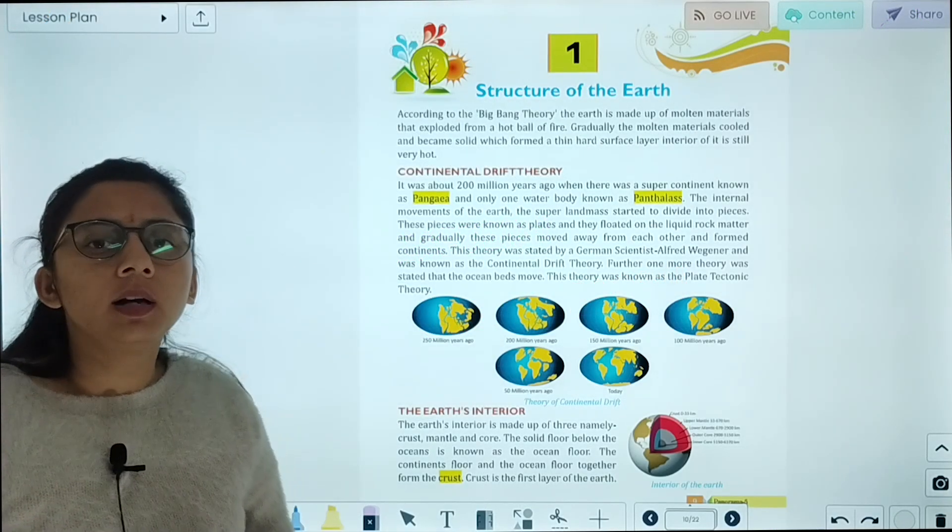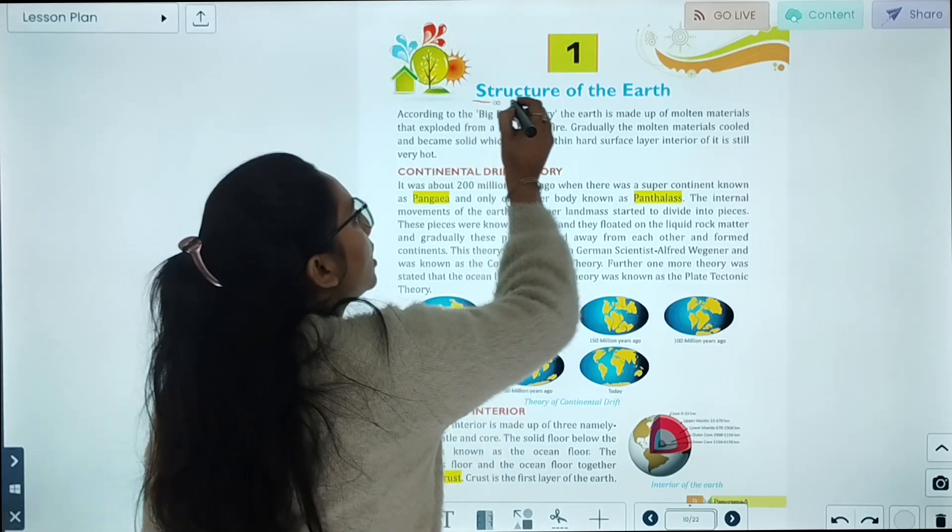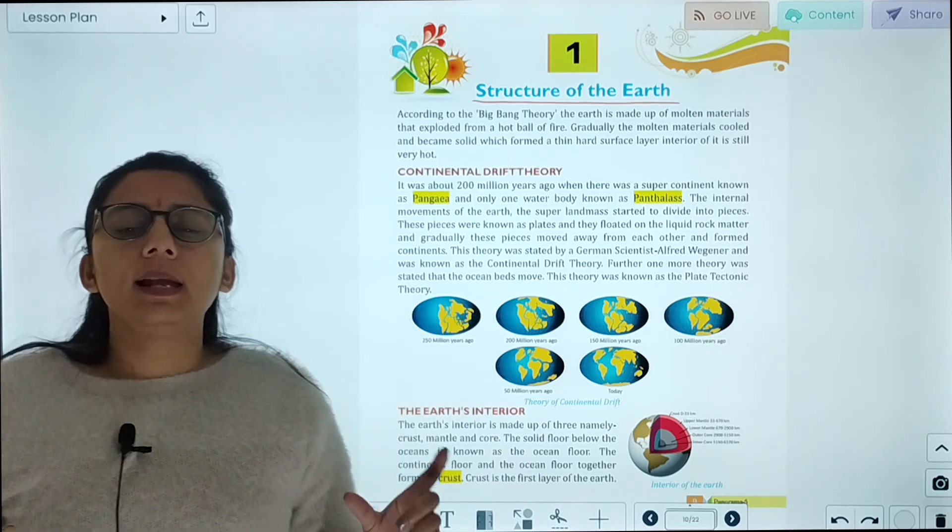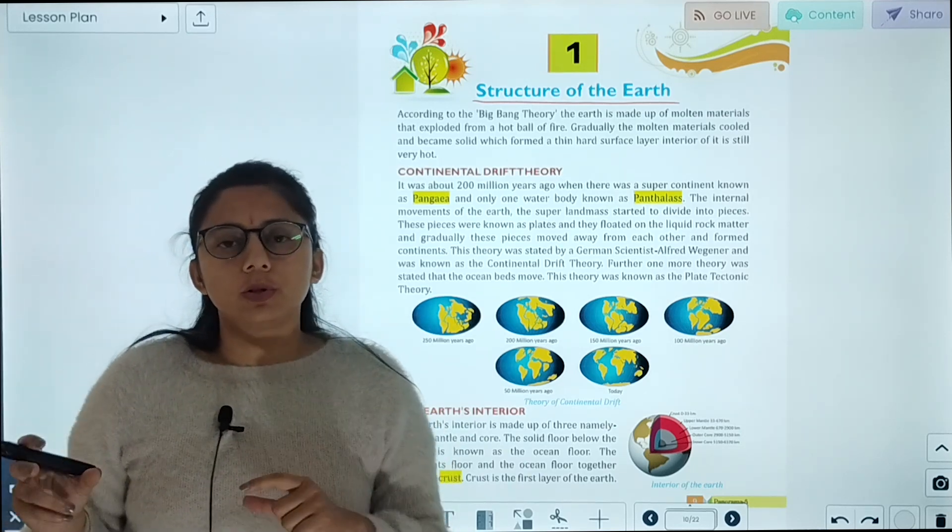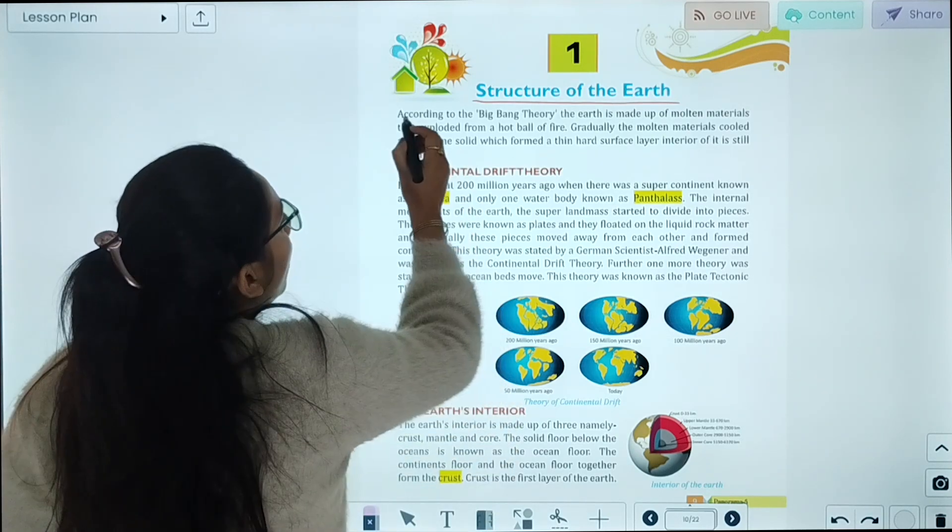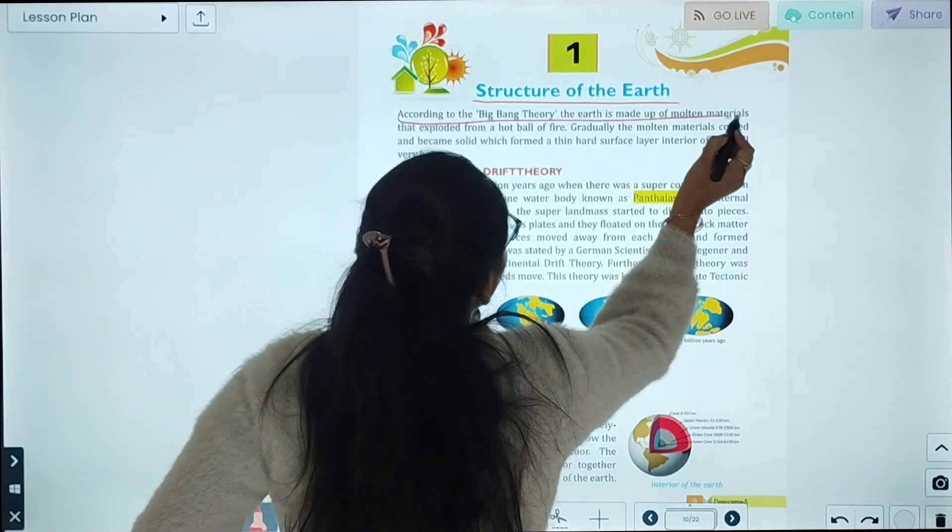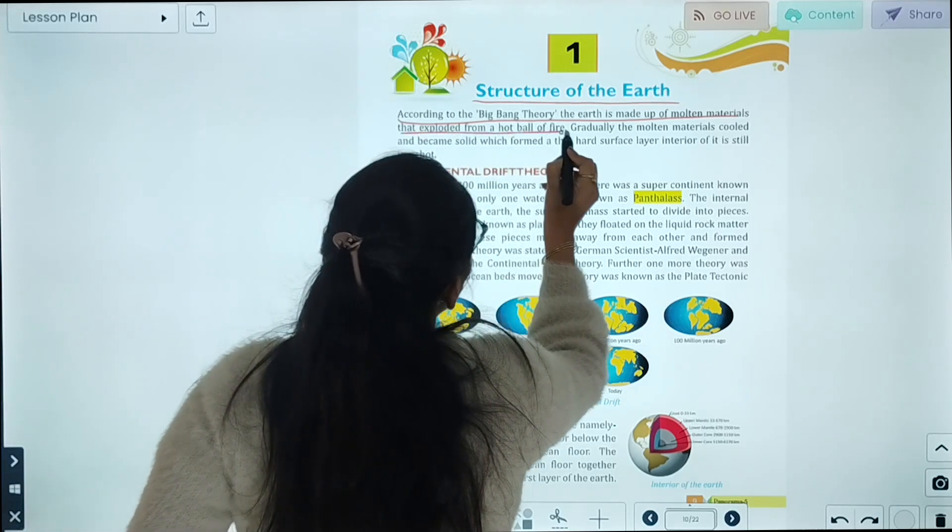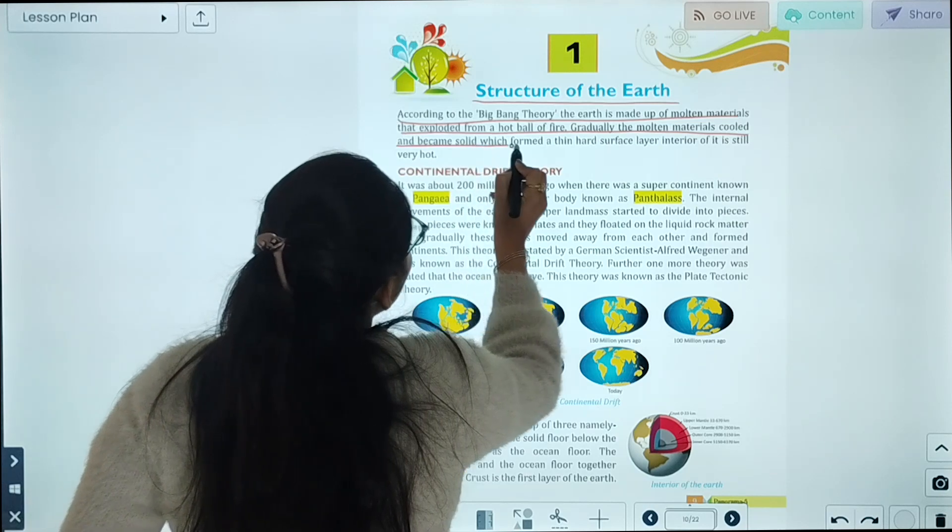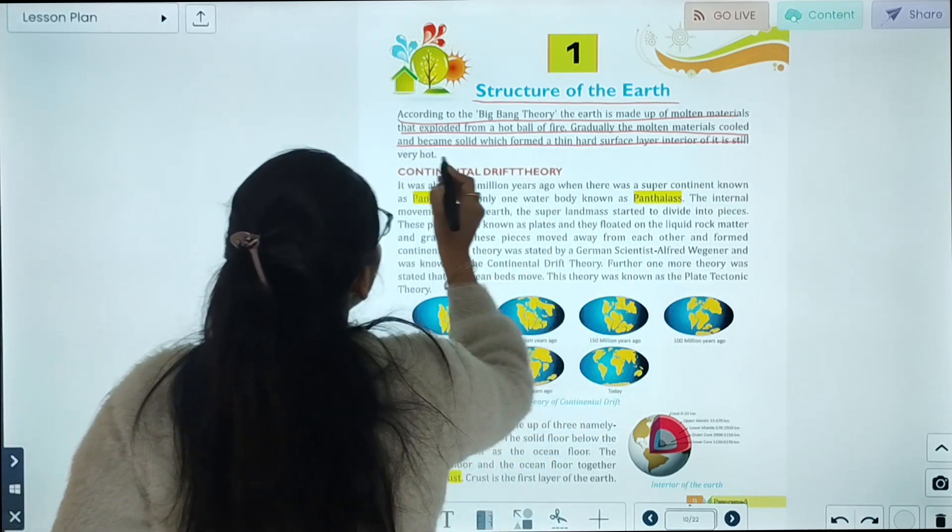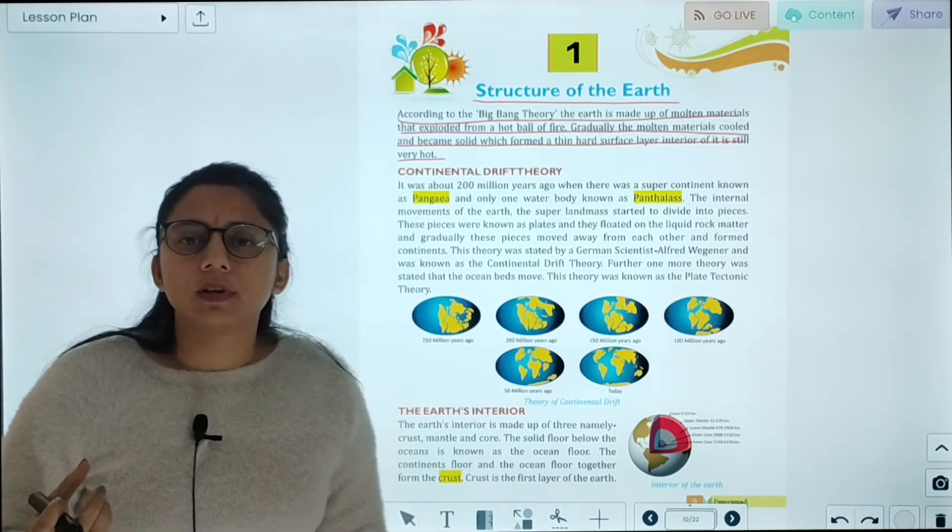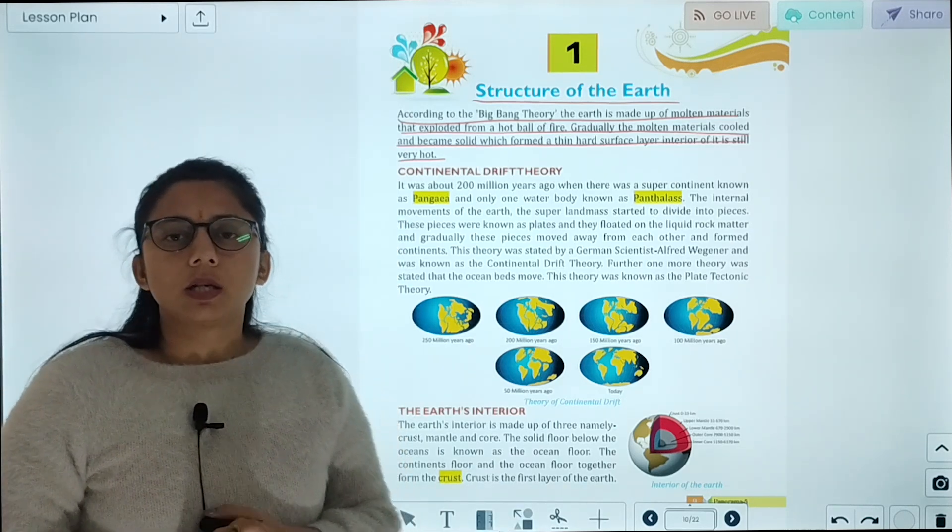Now today we are going to start with chapter number one, Structure of Earth. According to the Big Bang Theory, the earth is made up of molten material that exploded from the hot ball of fire. Gradually the molten material cooled and became solid, which formed the thin hard surface layer. The interior of it is still very hot.